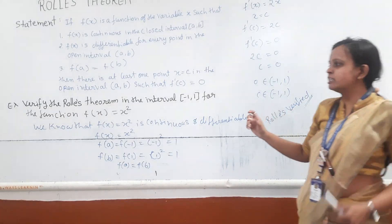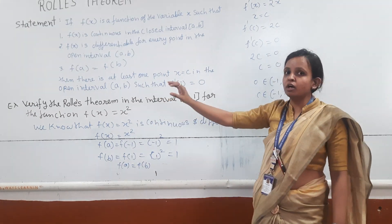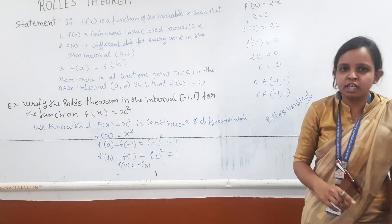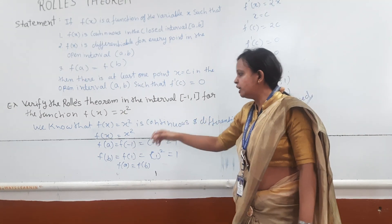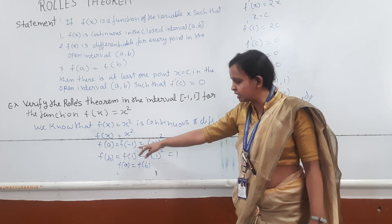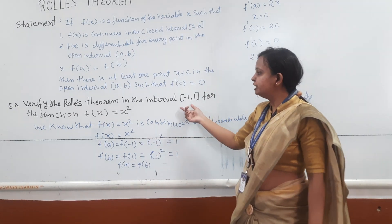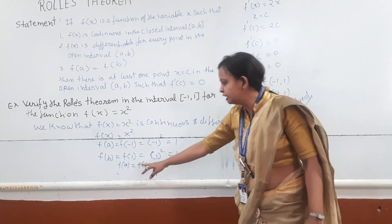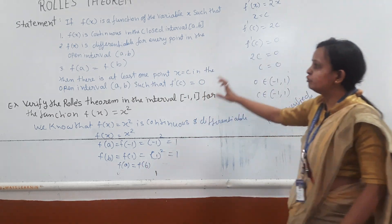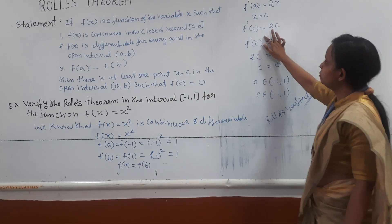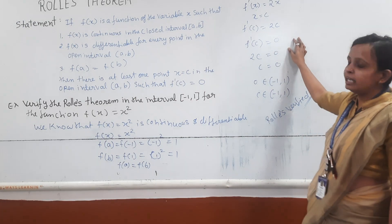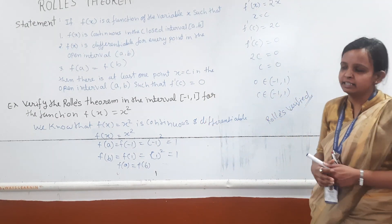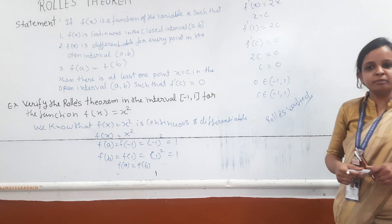In all questions, you should follow this approach: first check whether the function is continuous and differentiable — every polynomial function is continuous and differentiable. Then put the interval's endpoint values into the function and check if f(a) equals f(b). If they are equal, find the derivative, put x = c, set f'(c) = 0 to find c, and verify that c belongs to the interval. This was Rolle's theorem. Thank you.